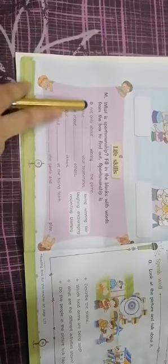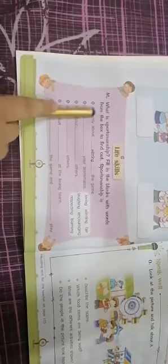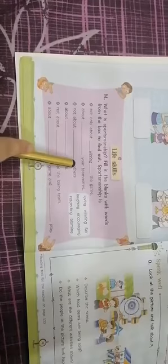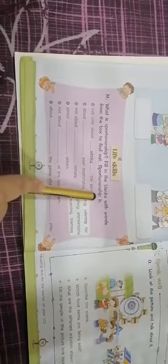What is sportsmanship? Fill in the blanks with words from the box to find out. Sportsmanship is not about winning the game, it is about respecting your teammates. Sportsmanship is not about blaming others, it is about encouraging others. Sportsmanship is not about laughing at the losing team, sportsmanship is about loving the game and fair play.